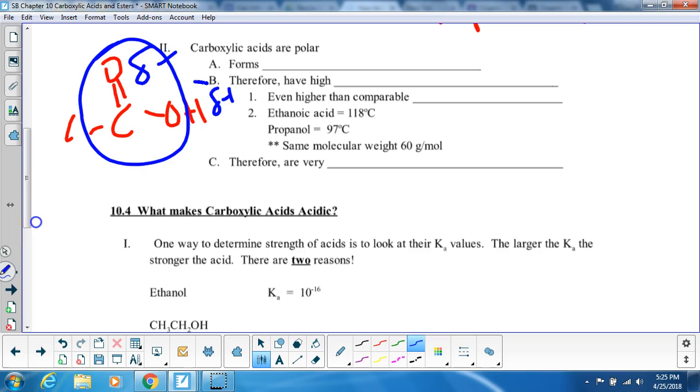this right here is where you get your hydrogen bonds. And if you recall, hydrogen bonds are the strongest of all the intermolecular forces. Because of this, they're going to have high melting point and boiling point. They're even higher than your alcohols.